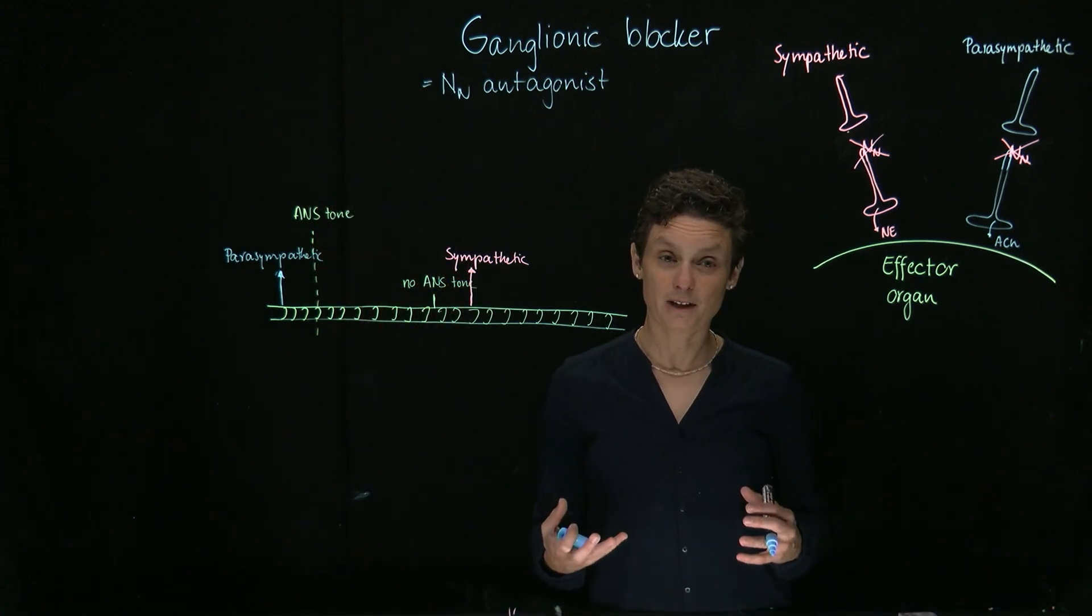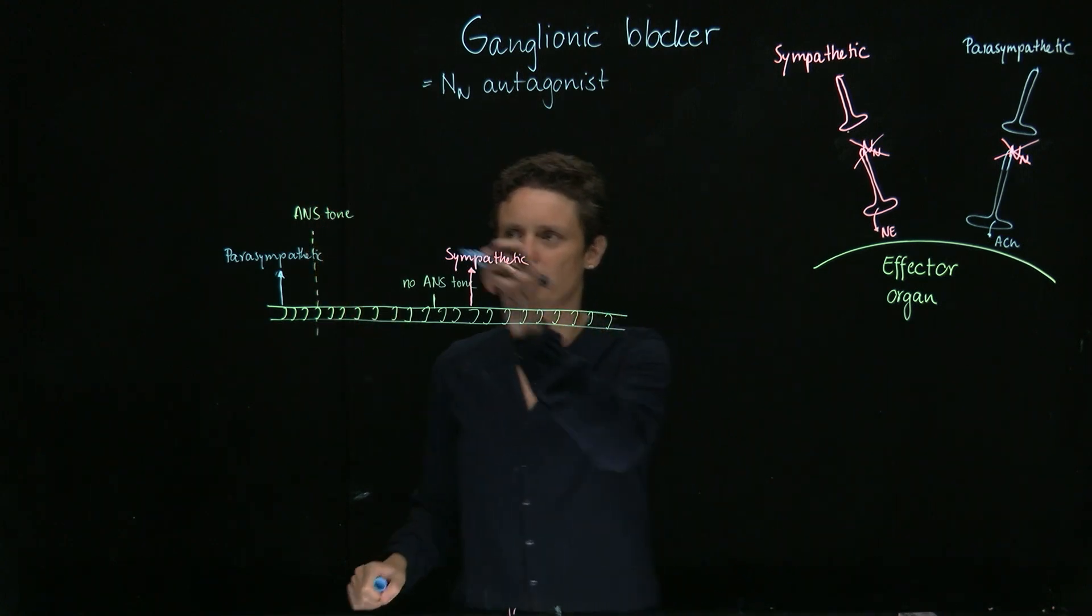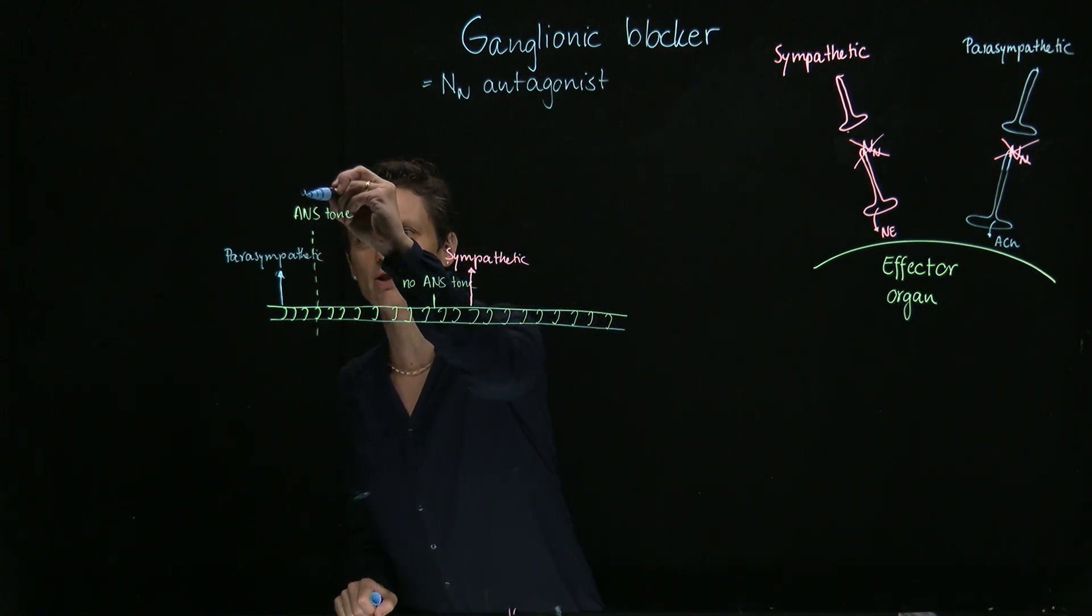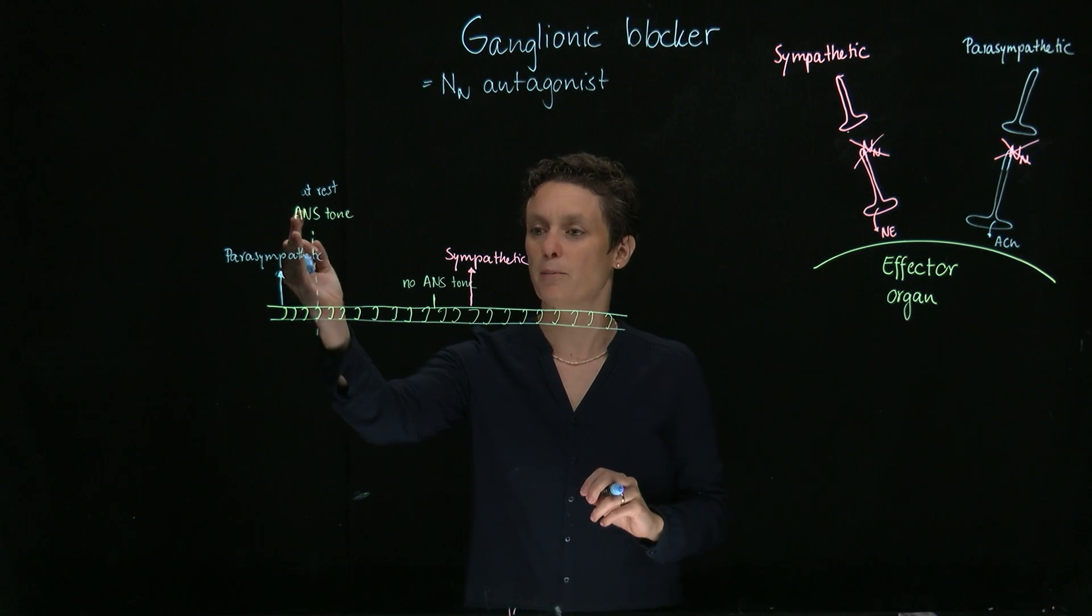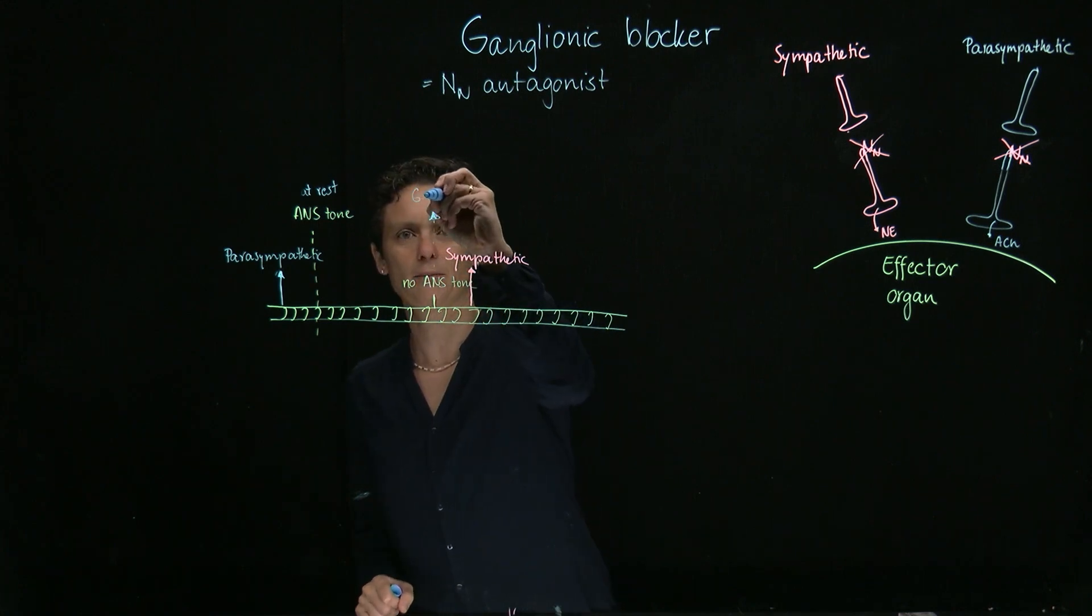So if we use now a ganglionic blocker, where would we end up on the rope? This would be our autonomic tone, our position at rest. We're talking about resting tone. And now, when we block it, we would come closely to no autonomic tone, because that was the purpose of a ganglionic blocker.